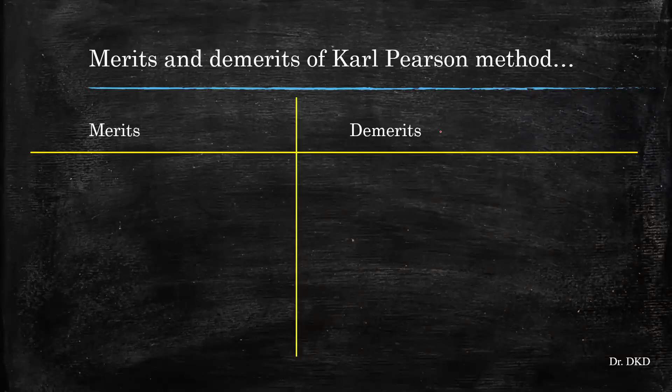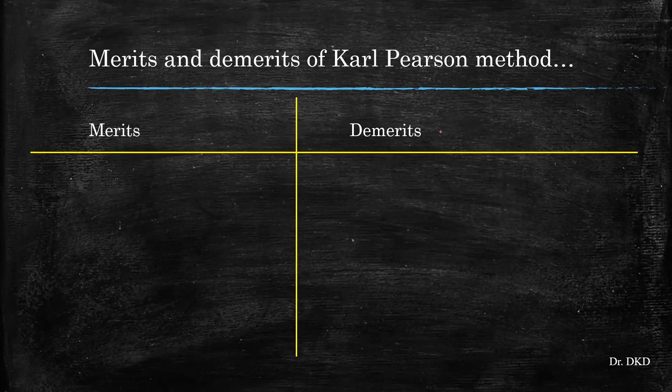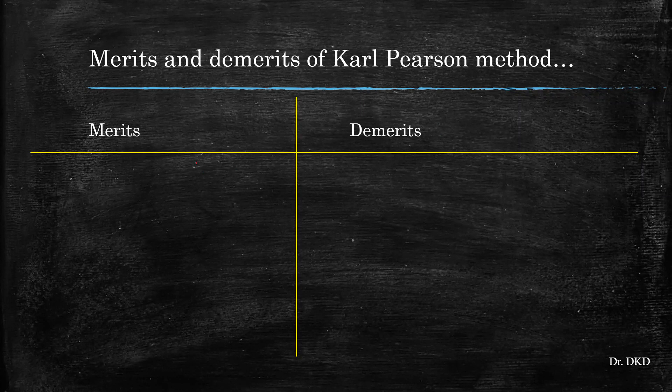What are the merits and demerits of Karl Pearson methods? We need to understand and differentiate them. So, merits of the Karl Pearson correlation method are: